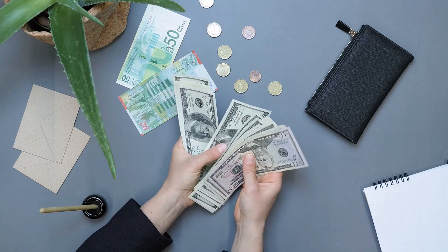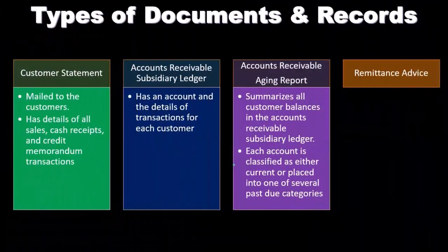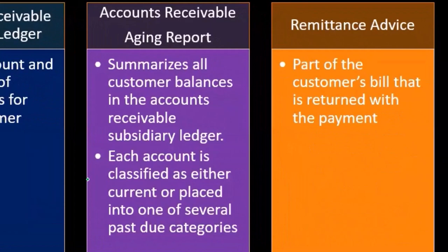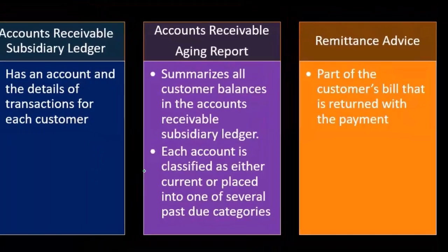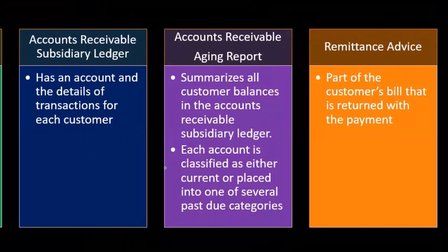The aging report helps us value accounts receivable and see if collections are happening in a timely manner. The remittance advice is the part of the customer's bill that is returned with the payment. When we receive a bill like a utility bill, that little slip you fill out and send back is important within internal controls - the check and the remittance typically come back together, go to different departments to be recorded as a form of check and balance when testing internal controls.